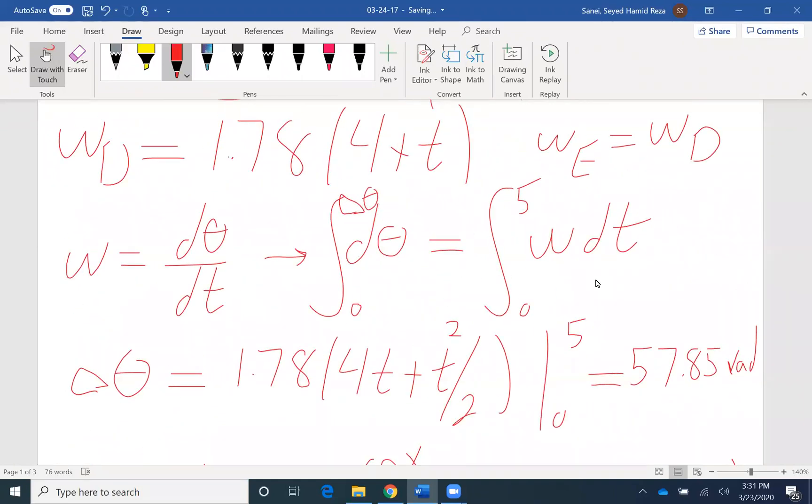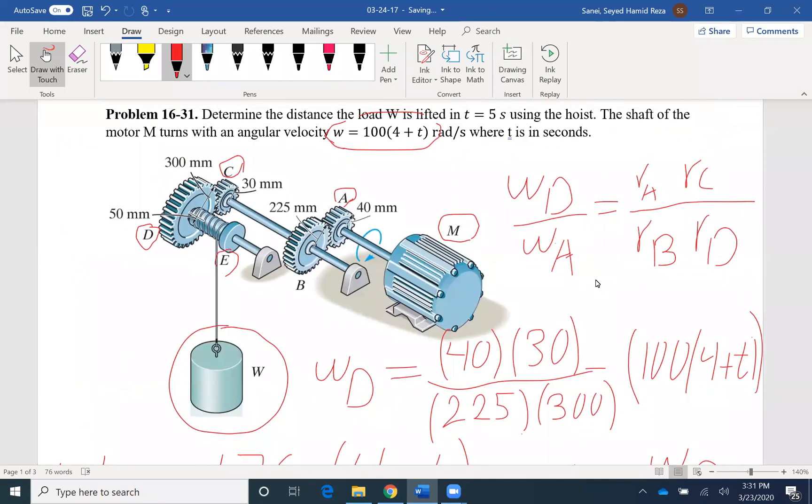So if we review the problem, we had an input angular velocity, omega A. We found the output angular velocity for gear D. This type of gear train is very common. If you look at the problem, we see that we are moving from gear A to gear B, from small gear to a large gear. So we are reducing the speed and increasing the torque.